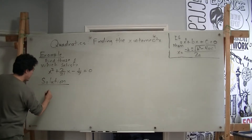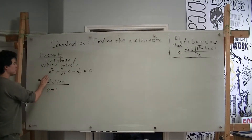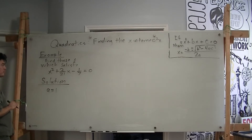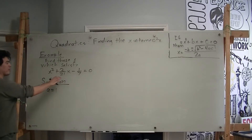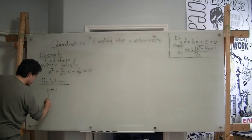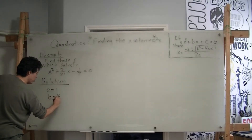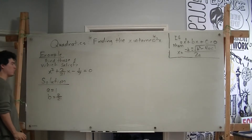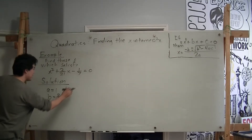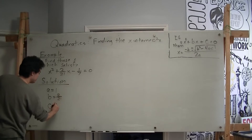So here I know that my a is going to be 1, because the coefficient in front of x squared is 1. I know that my b is going to be 2 over 21, because that's my coefficient of my x term. And I know that my c, my constant term in this case, is going to be negative 1 over 7.